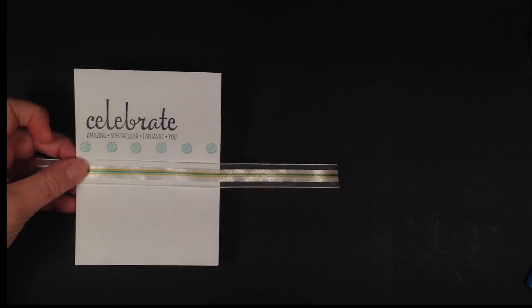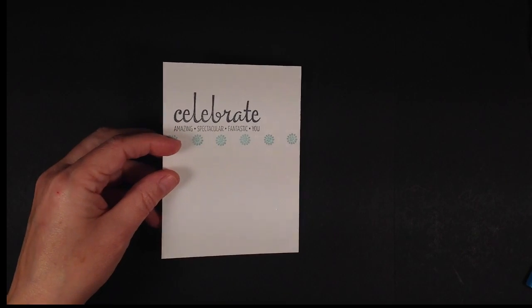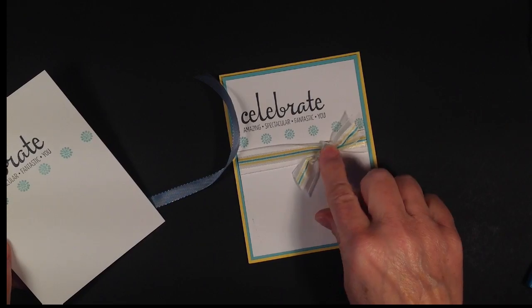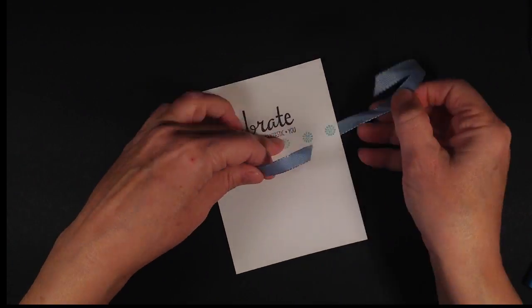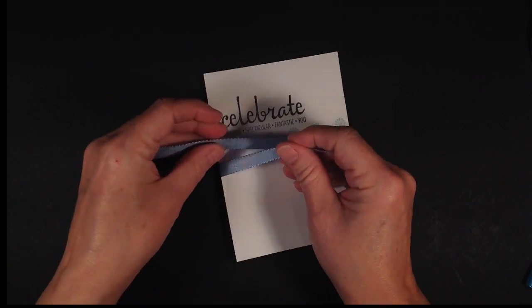Now some of you have asked again how to make this little flat bow each time and I do have a little trick for that. I'm going to show you with a darker ribbon here so it's a little easier to see.